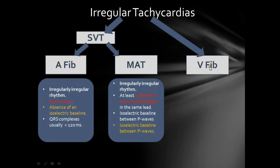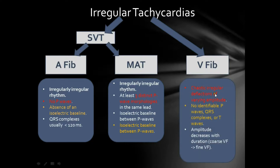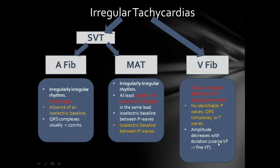Coming to the last irregular tachycardia — ventricular fibrillation — it is characterized on an ECG by chaotic irregular deflections of varying amplitudes. Therefore, you do not have any identifiable P waves, QRS complexes, or T waves. That's because the ventricles suddenly try to contract at rates up to 500 beats per minute, which renders them unable to contract in a synchronized manner, leading to a sudden drop in cardiac output and cardiac arrest. The amplitude decreases with duration, progressing from coarse ventricular fibrillation into fine ventricular fibrillation, and finally into asystole.